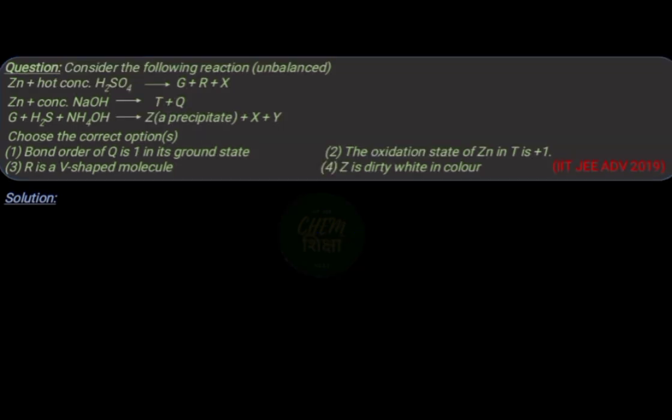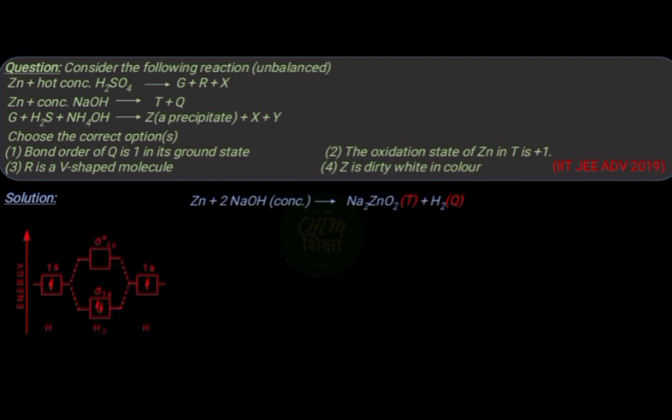Now consider option 1, in which we have to find out the bond order of molecule Q, that is H2 in ground state. According to molecular orbital theory, there are two electrons in sigma bonding molecular orbital in hydrogen molecule.